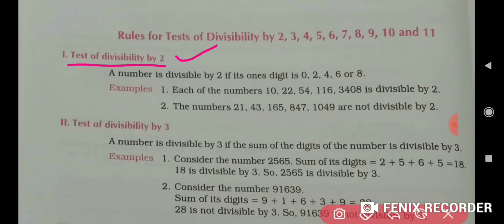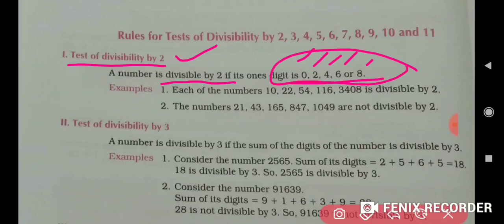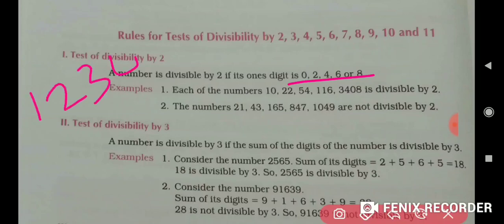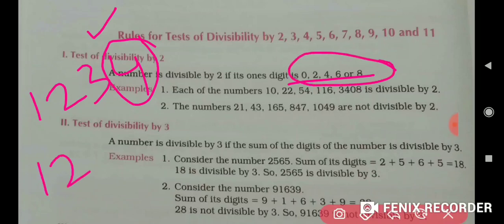How can you check if any number is divisible by 2? A number is divisible by 2 if its ones digit is 0, 2, 4, 6, or 8. If the ones digit of any number is 0, 2, 4, 6, or 8, then that number is divisible by 2. If these digits are not at the ones place, then the number is not divisible by 2. For example, if the ones digit is 3, then the number is not divisible by 2.